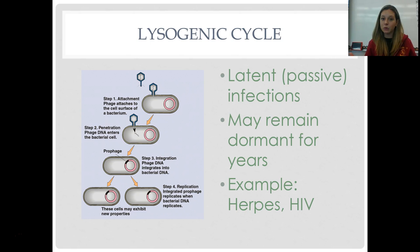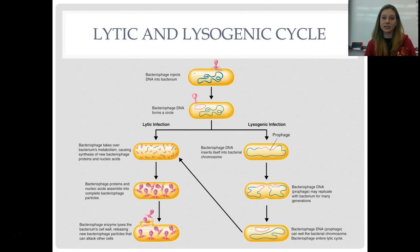Someone who has herpes may go through times with no symptoms at all, and then almost like a flare-up where symptoms appear. Same with HIV — someone with AIDS goes through periods of feeling great and then times where their immune system is quite depressed. Describe the lysogenic cycle and give examples. Note that you can go from the lysogenic cycle to the lytic cycle — that's when symptoms begin.